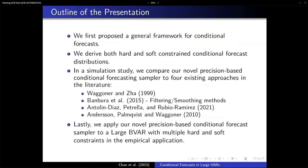The outline of the presentation: we propose a general framework for conditional forecasting. I'll derive both the hard and soft constraint conditional forecast distributions. In the simulation study, we compare our method to four existing methodologies: Wagner-Zar, Banbura et al. (filtering and smoothing methods), Antonio Diaz et al., and Anderson et al. for the soft constraint. Finally, we apply our novel precision-based conditional forecast on a large Bayesian VAR implementing multiple hard and soft constraints simultaneously — the first such study in the literature.